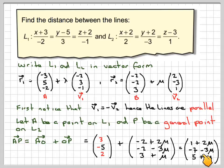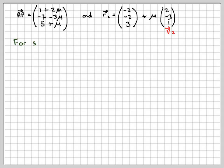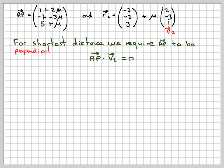Now we want this vector to be perpendicular to this line. We have a directional vector, so if we set the scalar product of these two vectors equal to 0, that will guarantee that we can find a value of mu where they're at right angles to each other. For the shortest distance, we require AP dot V2 equal to 0.